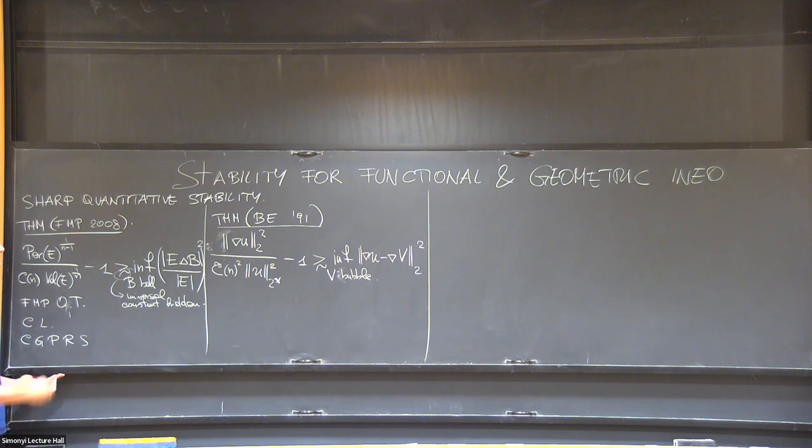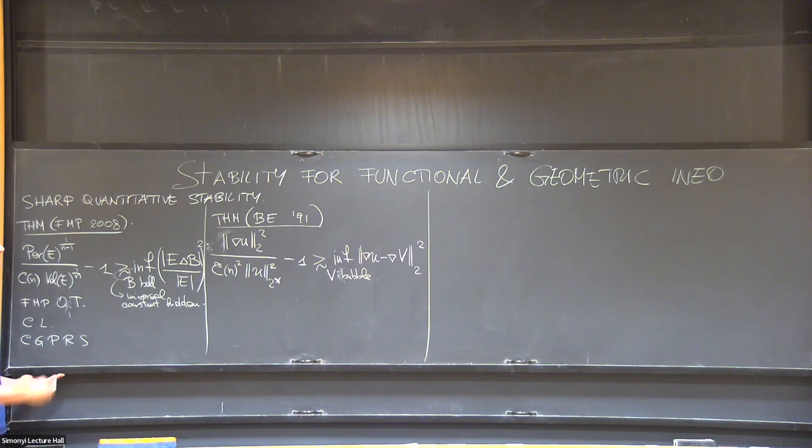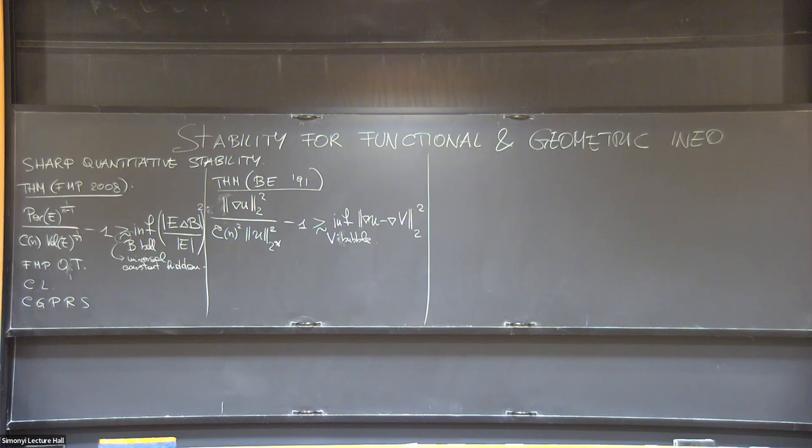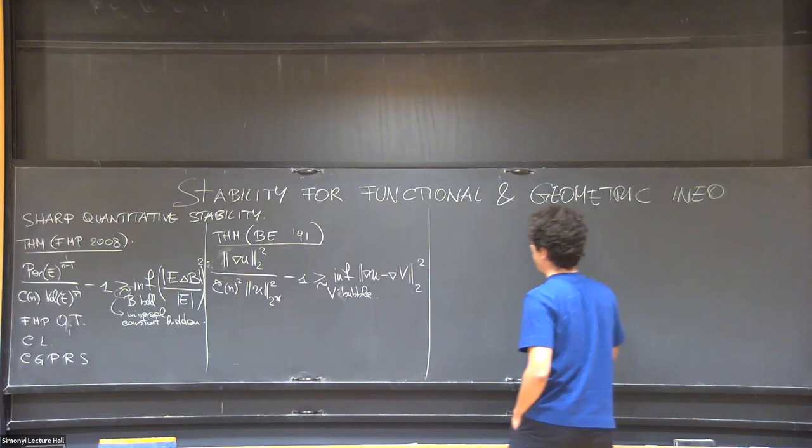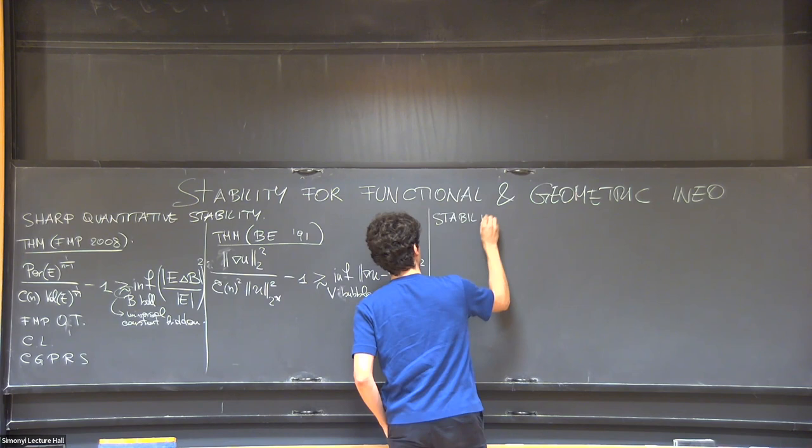As you see, the flavor is exactly the same. Let me mention that in some sense here, the proof is by nowadays considered standard and similar methods can be applied to obtain a similar stability result for other inequalities. Okay, so more or less this closes the questions for the sharp quantitative stability of minimizers.